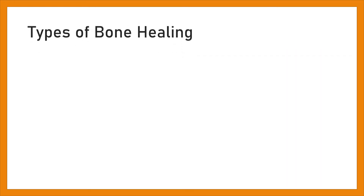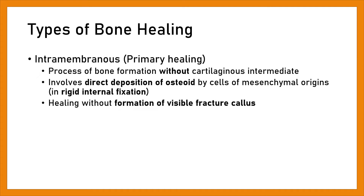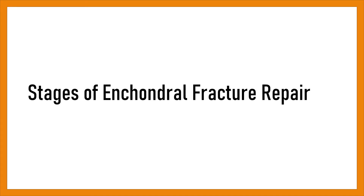Types of bone healing — Intramembranous primary healing: The process of bone formation without a cartilaginous intermediate. It involves direct deposition of osteoid by cells of mesenchymal origin, occurring in rigid internal fixation with healing without formation of visible fracture callus.